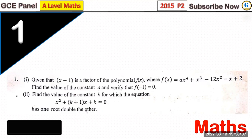Sub two: find the value of the constant k for which the equation x squared plus (k+1)x plus k equals zero has one root double the other.